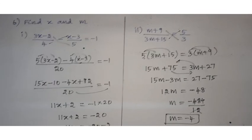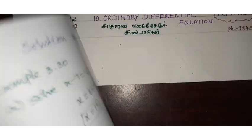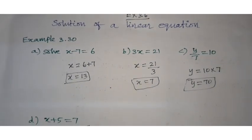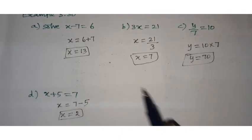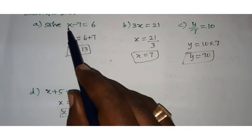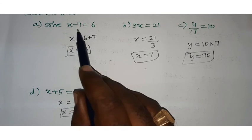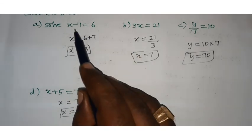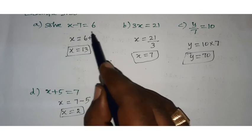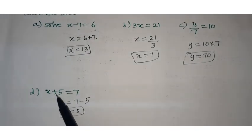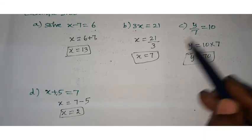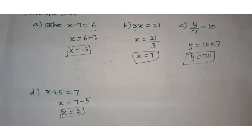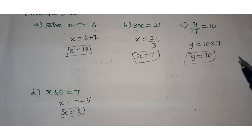That is all, students. This exercise covers all types of sums — fill in the blanks, true or false, match the following, and solve. Before doing the exercise, understand the basic concept: to find the unknown variable x, remove the number associated with it — minus term goes to the other side as plus, plus as minus, multiply as divide, divide as multiply. Once you understand this basic rule, you can solve all the sums.